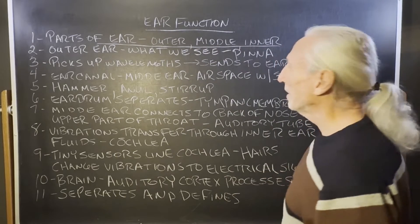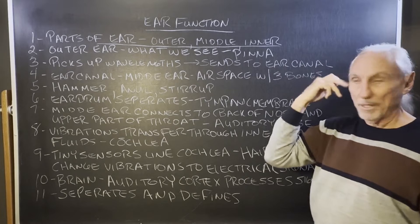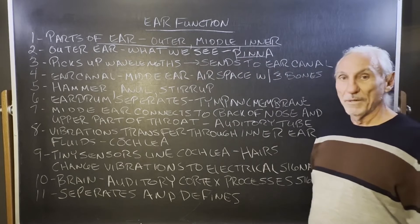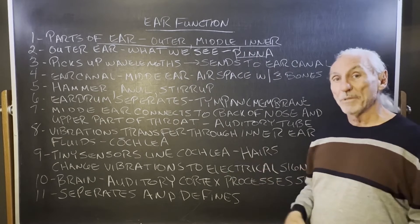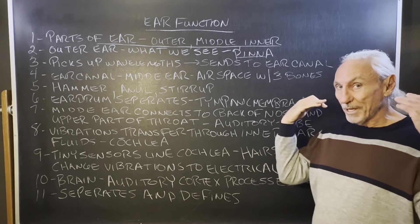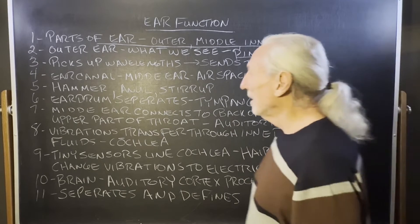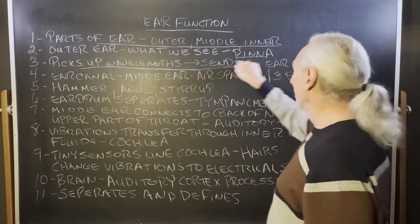We have parts of your outer, middle, and inner ear. The outer ear is what we see, this part here. It's called the pinna. That's like the antenna, the receiver of the energy. Notice it's vertical on the sides of our head and our eyes are forward. Think about that. So it picks up the wavelength and sends it to the ear canal.